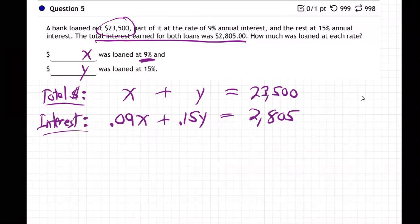So there's our two equations. So with two letters, you need two equations. The first one is just total dollars. X and Y, total, right? The bank loaned out $23,500 total. Part of it at 9%, part at 15%. There's the total interest. We have a total equation and an interest equation.